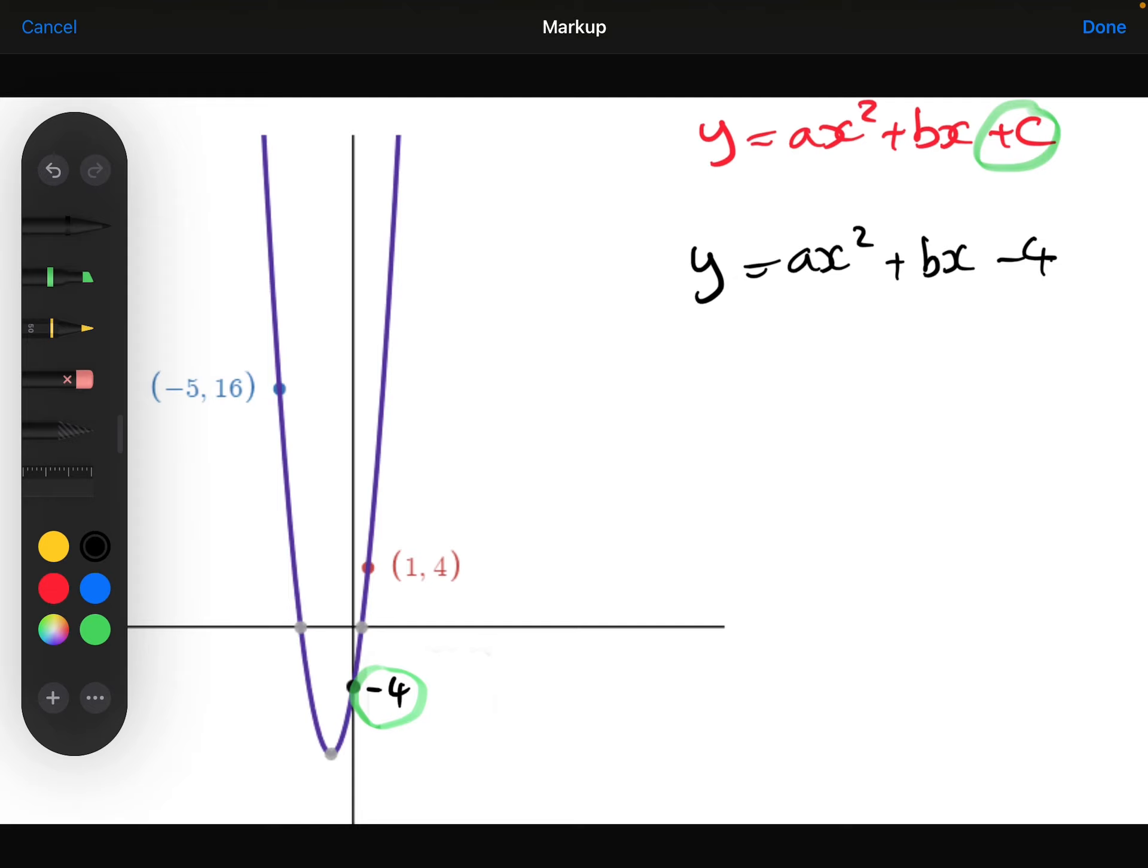Now, I do know that when x is 1, y is 4. So if I were to substitute that in, the y is 4 when the x is 1. The 1 squared is just 1 and a times 1 is a. The b times 1 is b. Then if I add the 4 to both sides, I get 8 is equal to a plus b.